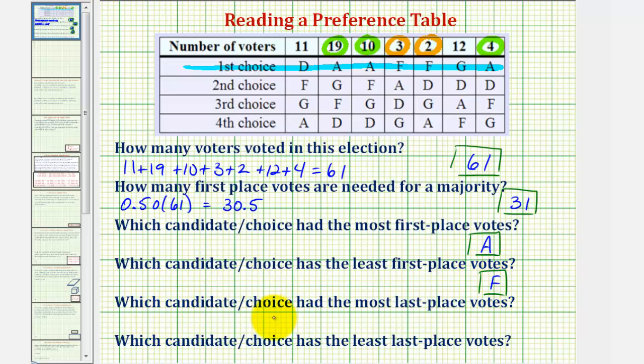Next, we're asked which candidate or choice had the most last place votes, which in this case would be the most fourth choice votes. So we'll analyze this row here. A received a total of 11 plus 2, or 13, fourth choice votes. But notice candidate D received 19 plus 10, or 29, fourth choice votes. G received 3 plus 4, or 7, and F received 12. So candidate D received the most fourth choice or last place votes.